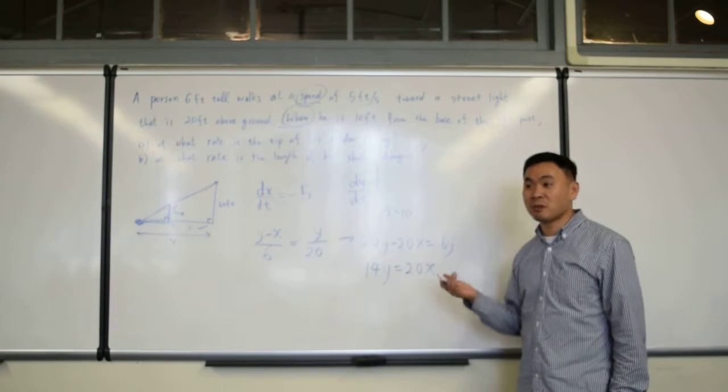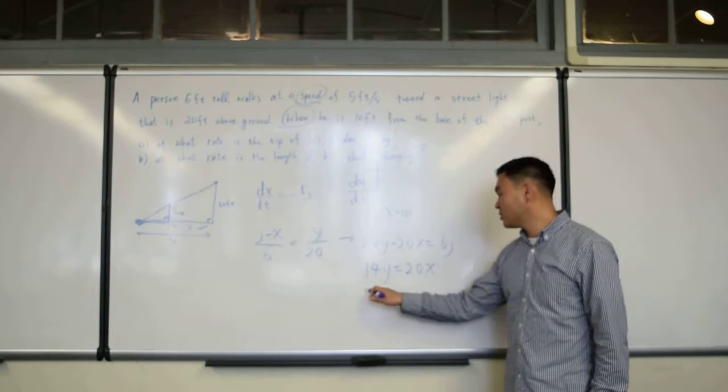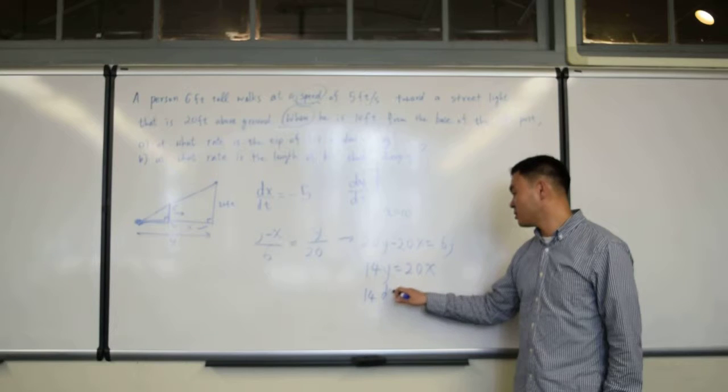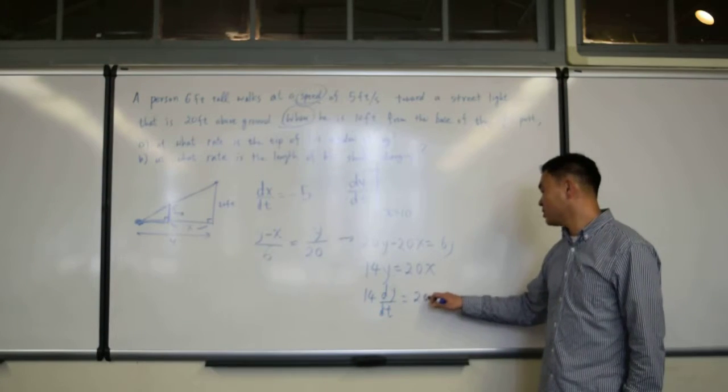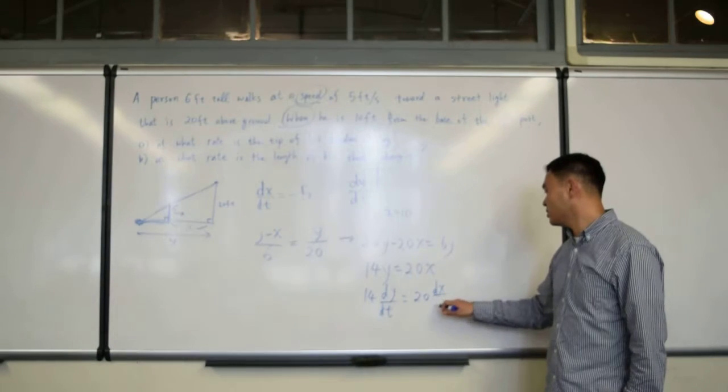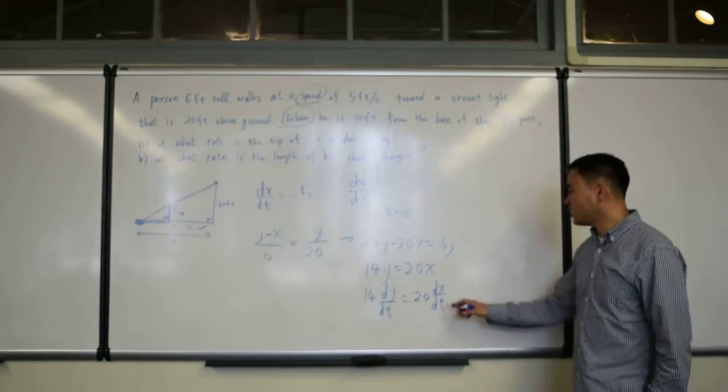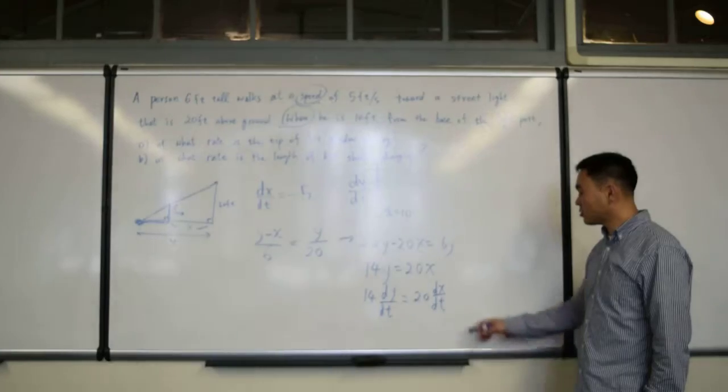Okay, so we're almost done. Now, differentiate both sides by t. So, what is that? That's 14 dy/dt = 20 dx/dt. dx/dt is negative 5. So, plug that in.